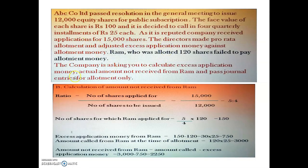Just to clarify from the previous practical problem: 'allotted' and 'issued' have the same meaning. In that earlier problem, the allotted shares (120 shares) were given, so 'allotted' was taken as the denominator. Whatever is given in the question — applied or allotted — that is taken as the denominator, and what we want to find is placed in the numerator.